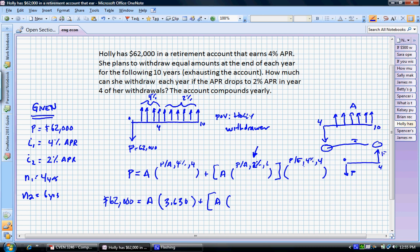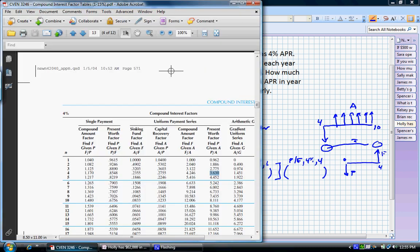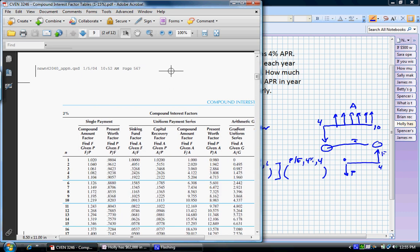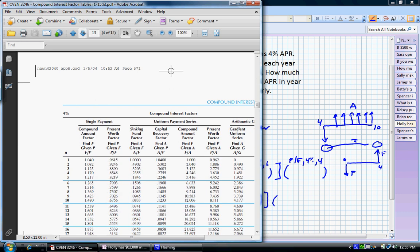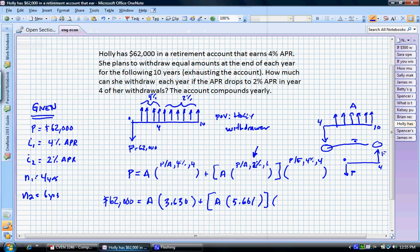So let's go to the 2% table and look up six years, the P/A factor. We're going to go up to 2%. We're looking for the P/A factor in six years, and that shows as 5.601. And we're finally going to say P/F, 4% in four years. So we're going to go back to the 4% table, four years. P/F is 0.8548. And when we solve for A, A gives us $7,365.40.